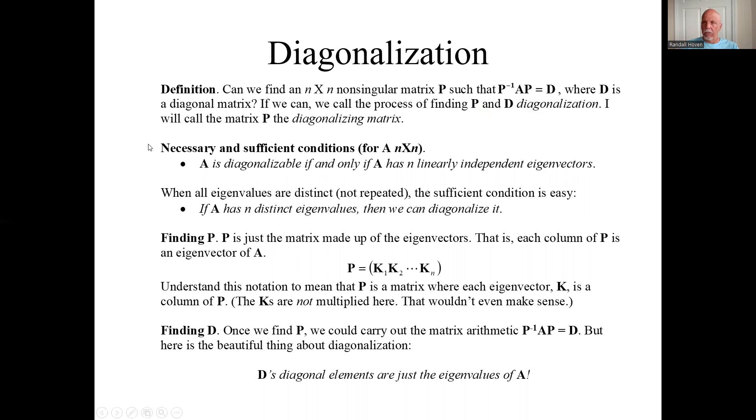And here's how it works. Yes, you can find the P if the matrix A is diagonalizable if it has n linearly independent eigenvectors. If A is n by n, and it has n linearly independent eigenvectors, it is diagonalizable.